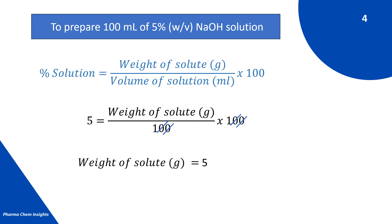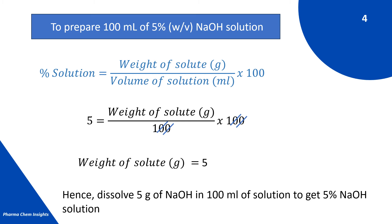By calculating, we get the weight of solute required in grams equals 5. Hence, dissolve 5 grams of NaOH in 100 ml of solution to get 5% NaOH solution.